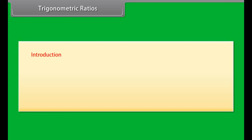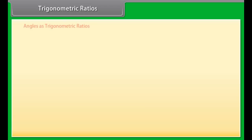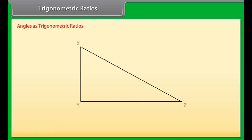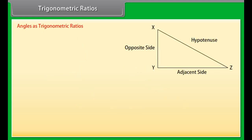Trigonometric Ratios. Let us begin our introduction to trigonometry with trigonometric ratios. We will express the angles as trigonometric ratios, compare trigonometric ratios of similar triangles, and solve examples. Look at triangle XYZ, right-angled at Y. Angles X and Z are both acute. XY is the side opposite to angle Z, YZ is the side adjacent to angle Z, and XZ is the hypotenuse.